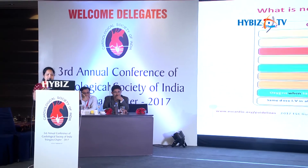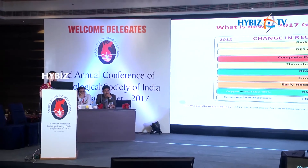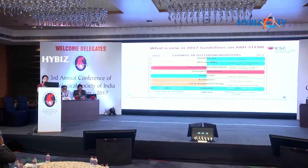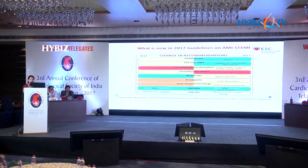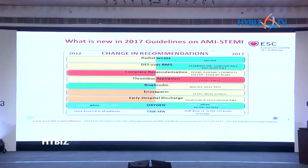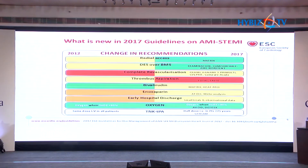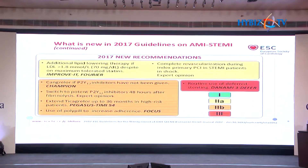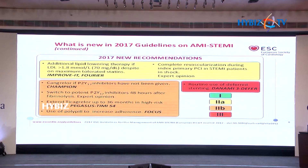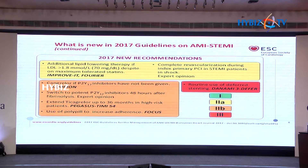Early hospital discharge is supported by small trials and observational data. Regarding oxygen usage, previous guidelines required administration if saturation was less than 95%, but the latest recommendation is to avoid routine oxygen and give it only if saturation falls below 90%. TNK-tPA at half dose is recommended in patients over 75 years with STEMI. LDL targets have changed: previously below 100 mg/dL, now below 70 mg/dL despite maximum tolerated statins, based on the IMPROVE-IT and FOURIER trials.